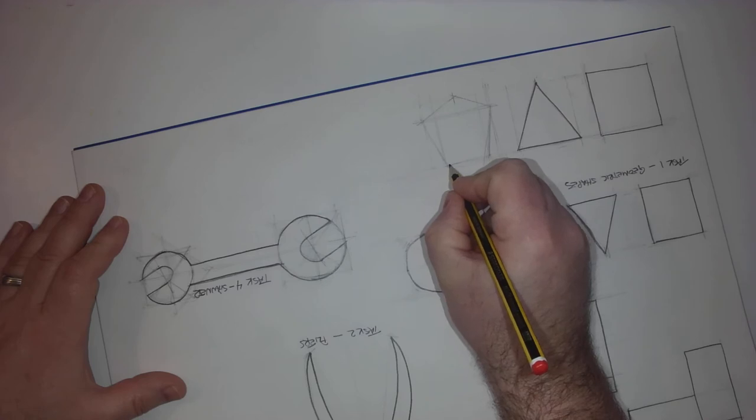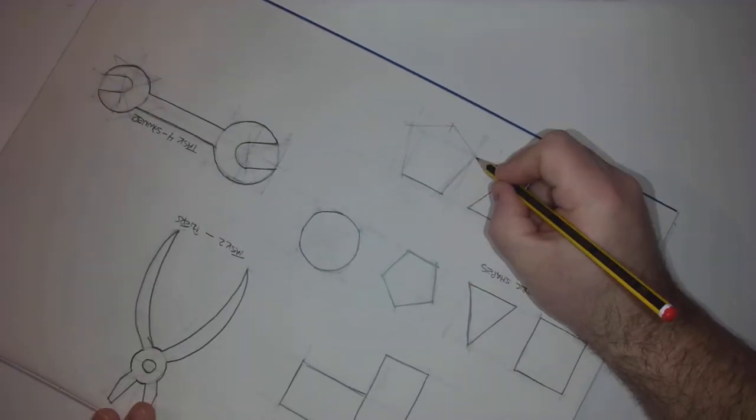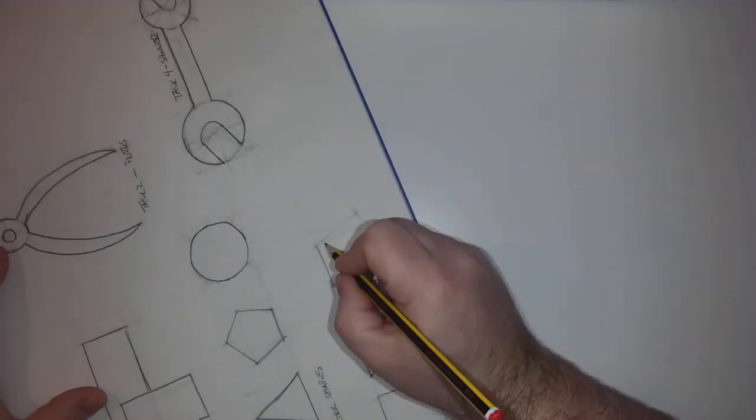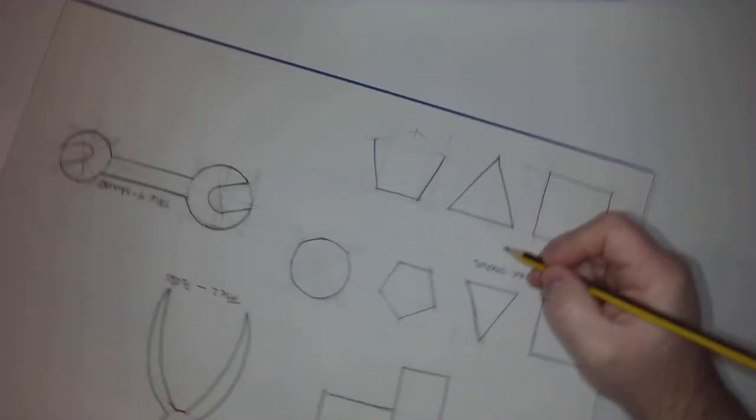So having achieved that, change my pencil grip back to a writing grip, and now I can outline in all five sides of the pentagon, now that I've got them constructed.